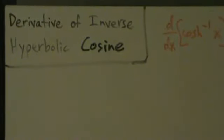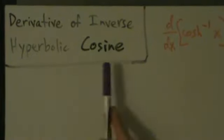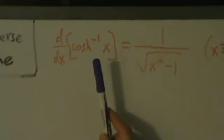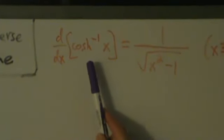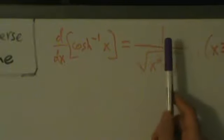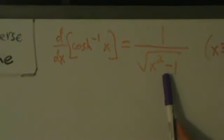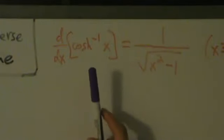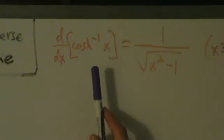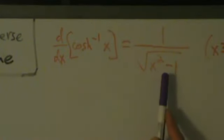In this video, we're going to do the derivative of the inverse hyperbolic cosine. So here, d/dx of inverse cosh of x equals 1 divided by the square root of x squared minus 1. It's a lot like the derivative of the inverse hyperbolic sine, except the plus 1 is now a minus 1.